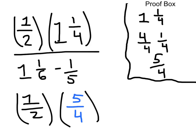Now on the bottom, we can just replace 1 and 1/4 with the improper fraction 5/4. And we can multiply straight through. Multiplying the numerators 5 times 1, we have 5.